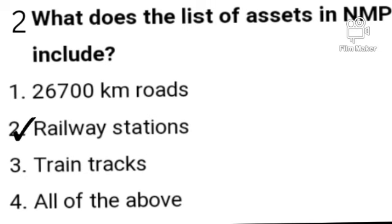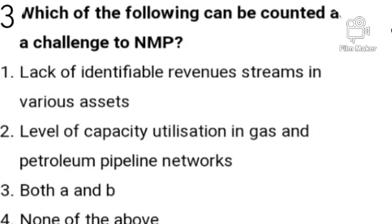Option B is the correct answer. Railway stations — that is what the list of assets in NMP includes.